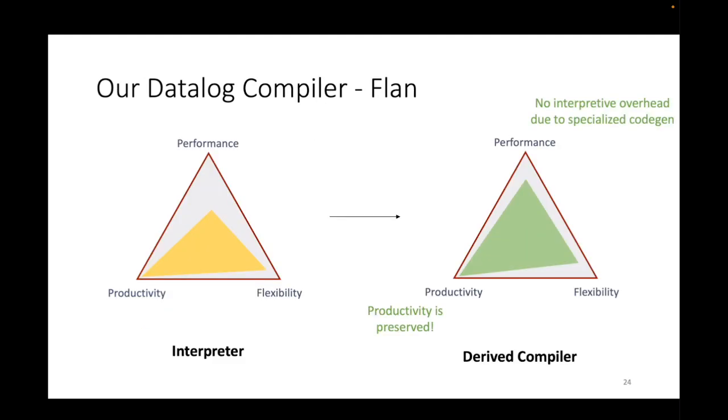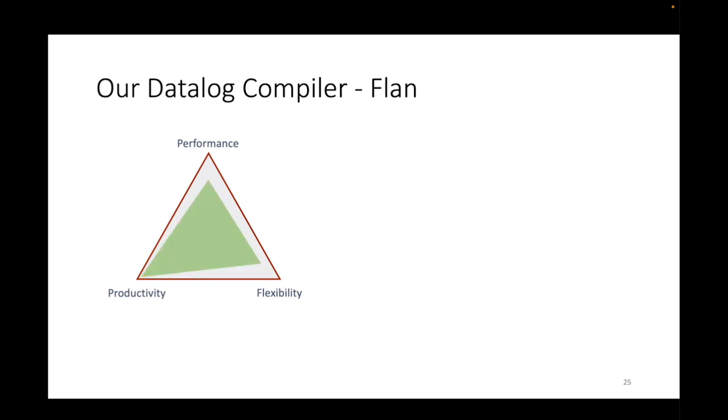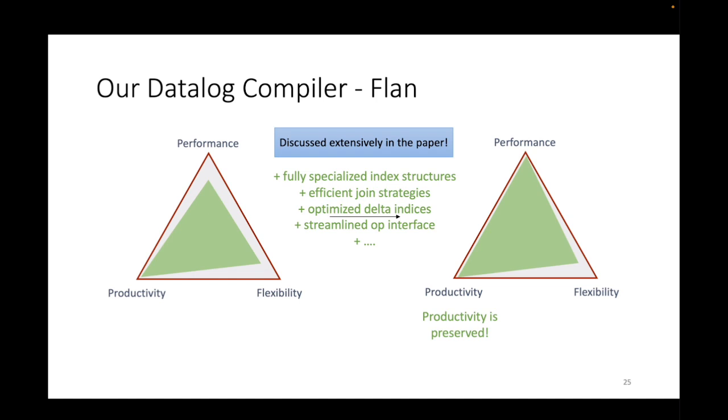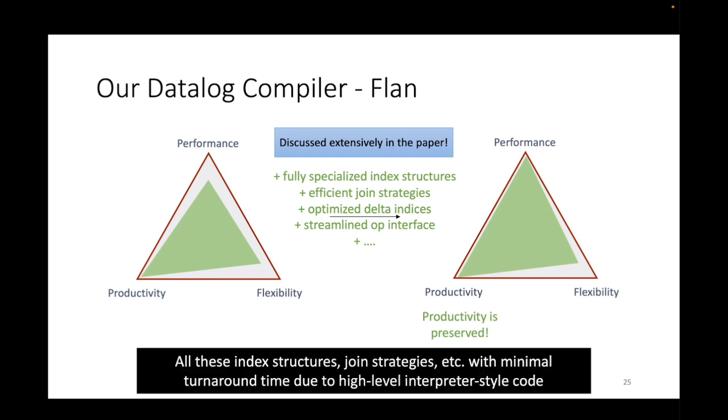So where do we stand? In terms of productivity, we still preserve the productivity levels because we still have the same high-level interpreter style code. Now the performance is improved because we do not have the interpretive overhead we had, and because we are now generating specialized code. Due to the interest of time, I'm not gonna go into detail, but in the paper we discussed how we improve the performance further by having fully specialized index structures and having multiple join strategies and optimizations to index structures. The key here is that all these implementations and optimizations can be done with minimal turnaround time because our code is simply interpreter style high-level Scala code which can be easily maintained.